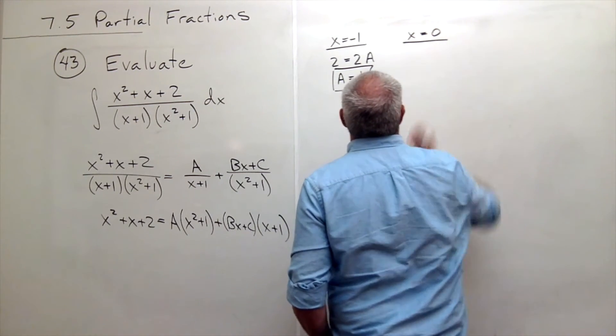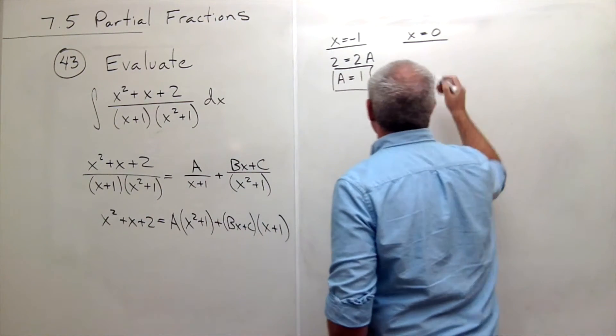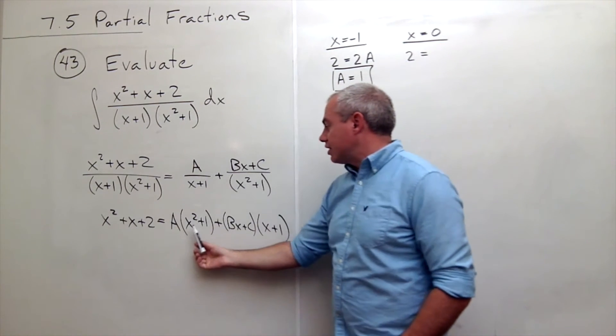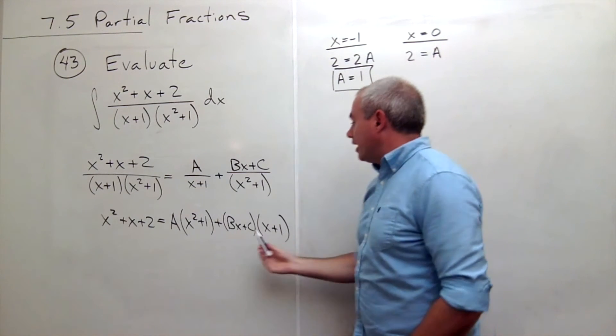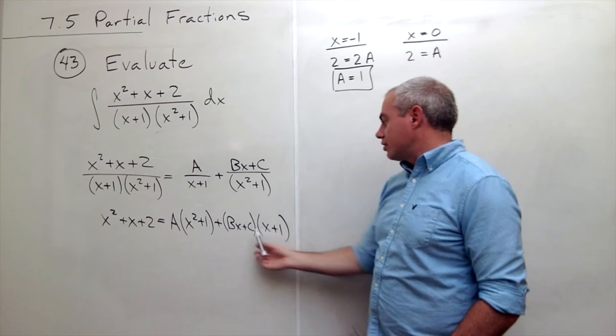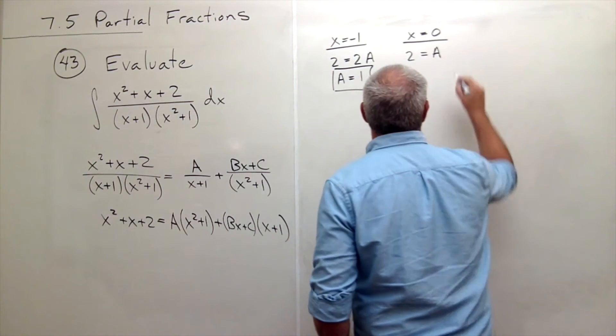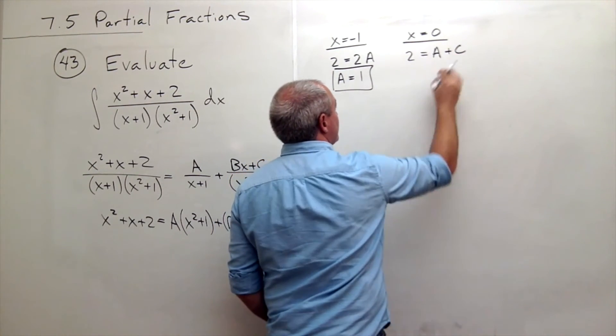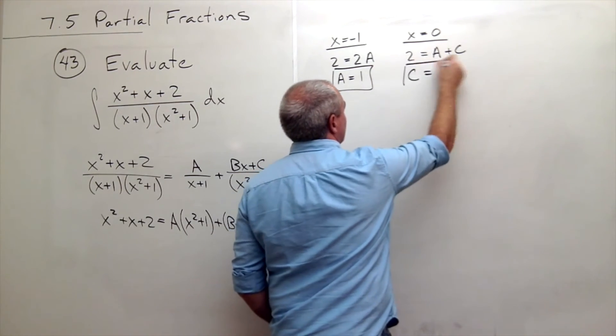Let's see what happens when x is equal to 0. If x is 0, I have 2 on this side. And on this side, I have 0 plus 1 is 1, 1 times a, so a. And then I have 0 times b, and 0 plus 1. So this is c, and this is 1, so plus c. Well, a is 1, so c must also be 1. So c is equal to 1.